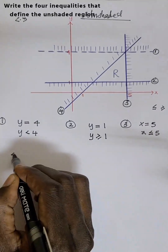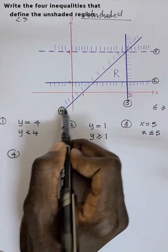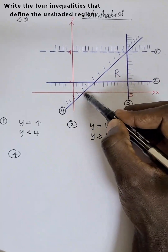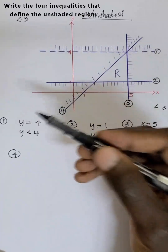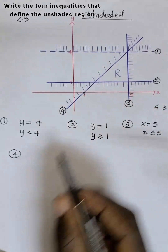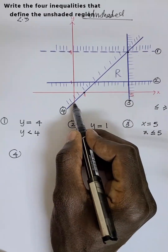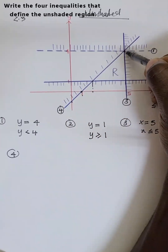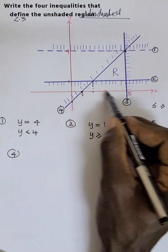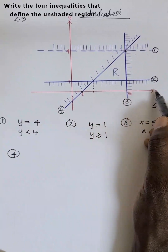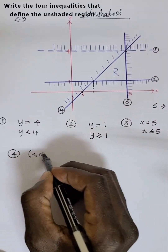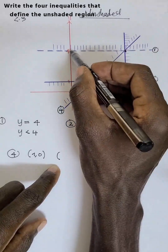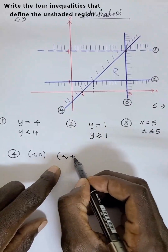For line four, this line touches the x-y plane at more than one point. We pick two points we can easily identify. The first point on the x-axis where y is zero gives us one comma zero. The second point is five comma four. We'll use these two points to find the gradient.